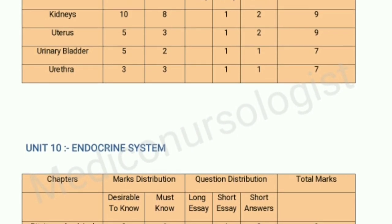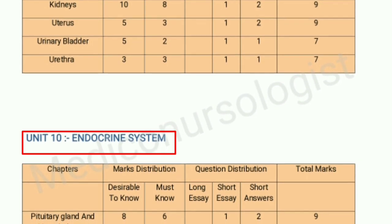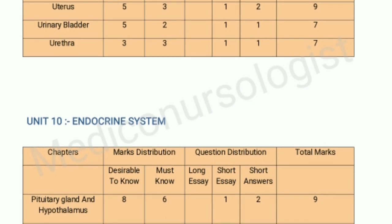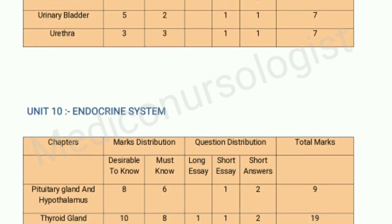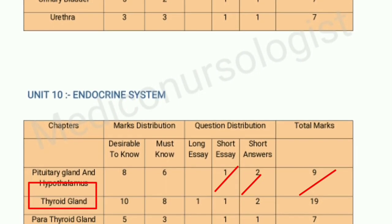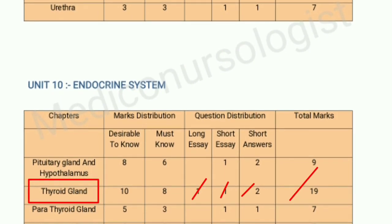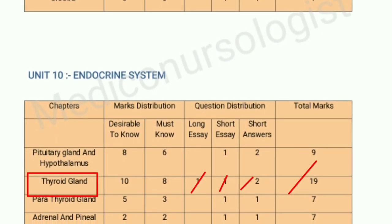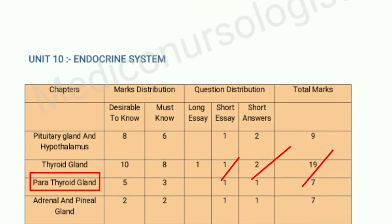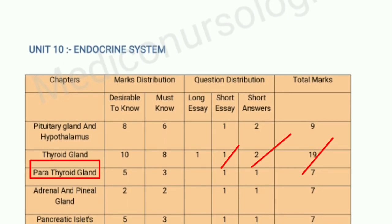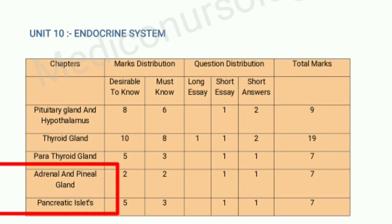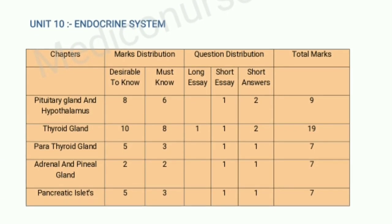Our next unit is Unit 10, the endocrine system, which has four chapters: pituitary gland, hypothalamus, thyroid gland, parathyroid gland, adrenal gland, and pancreatic islets. The pituitary gland and hypothalamus chapters carry 9 marks each — 1 question for 5 marks and 2 questions for 2 marks. The thyroid gland carries 9 marks with 1 question for 5 marks and 2 questions for 2 marks. The adrenal gland carries 7 marks, and the pancreatic islets chapter carries the same marks distribution as the thyroid gland.